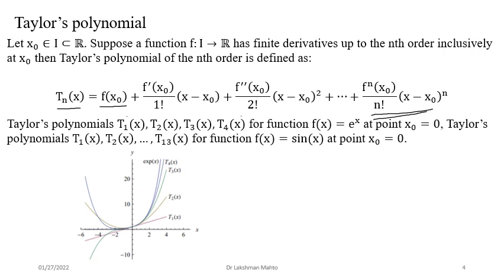The exponential function is shown as the blue curve. For the first-order approximation T₁, it would be a line. As we increase the degree to T₂, we get this polynomial. For eˣ, the kth derivative is eˣ itself for every positive integer k. So for T₁ in the neighborhood of 0, x₀ = 0, we get T₁ = 1 + x.